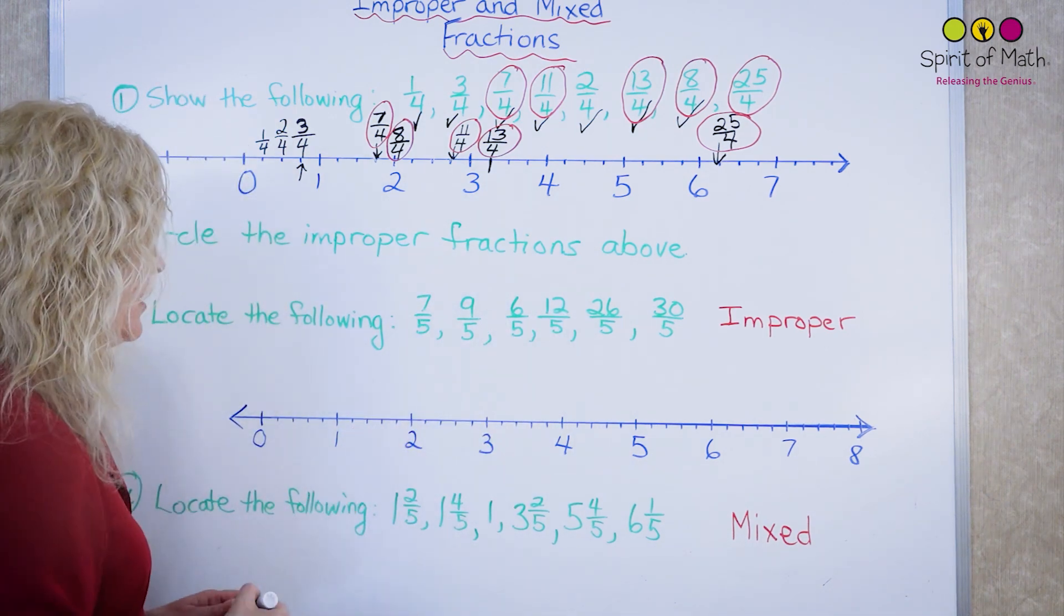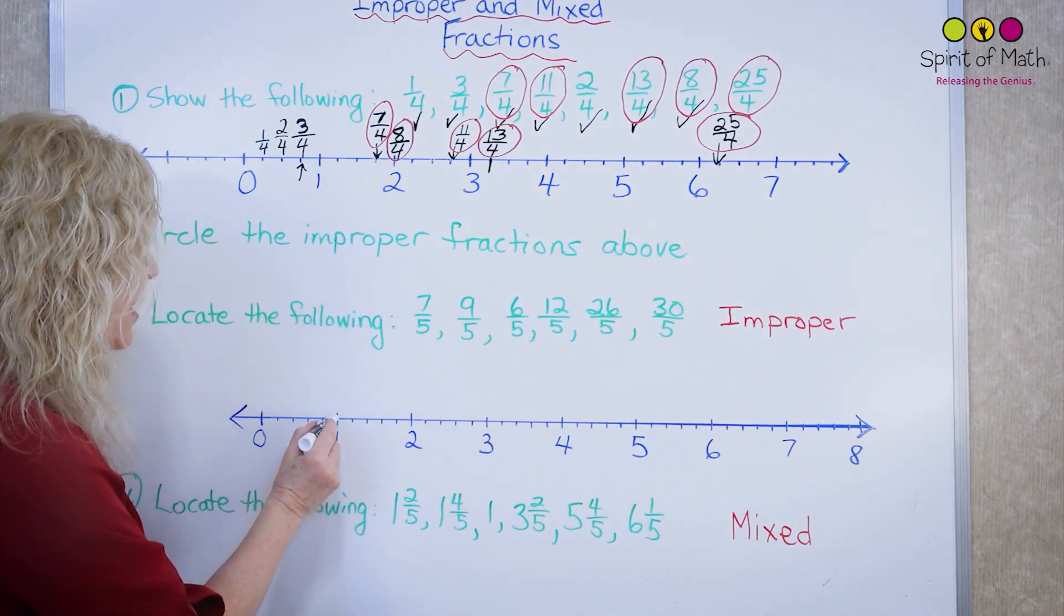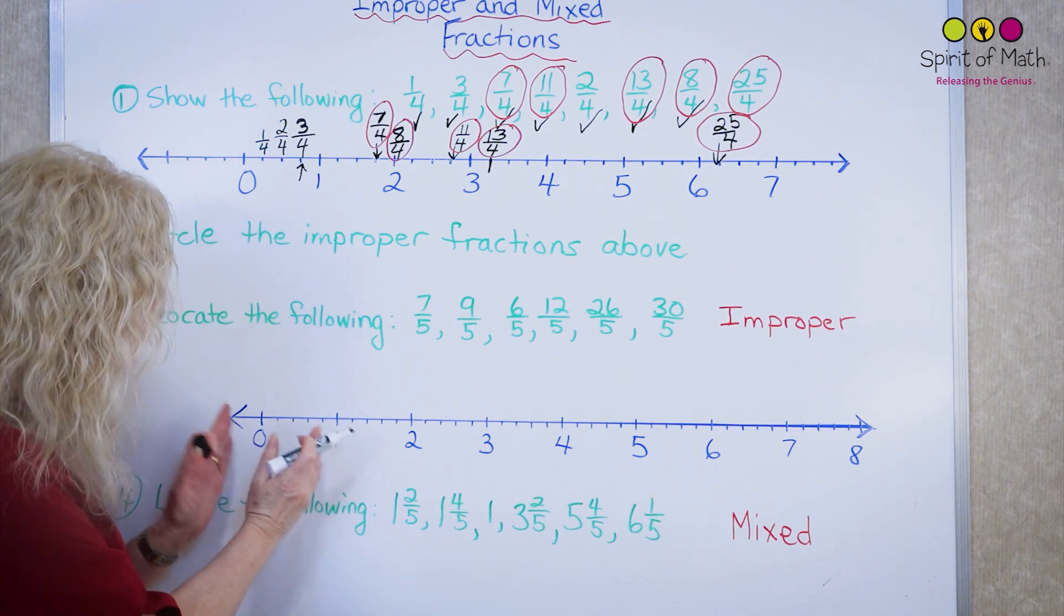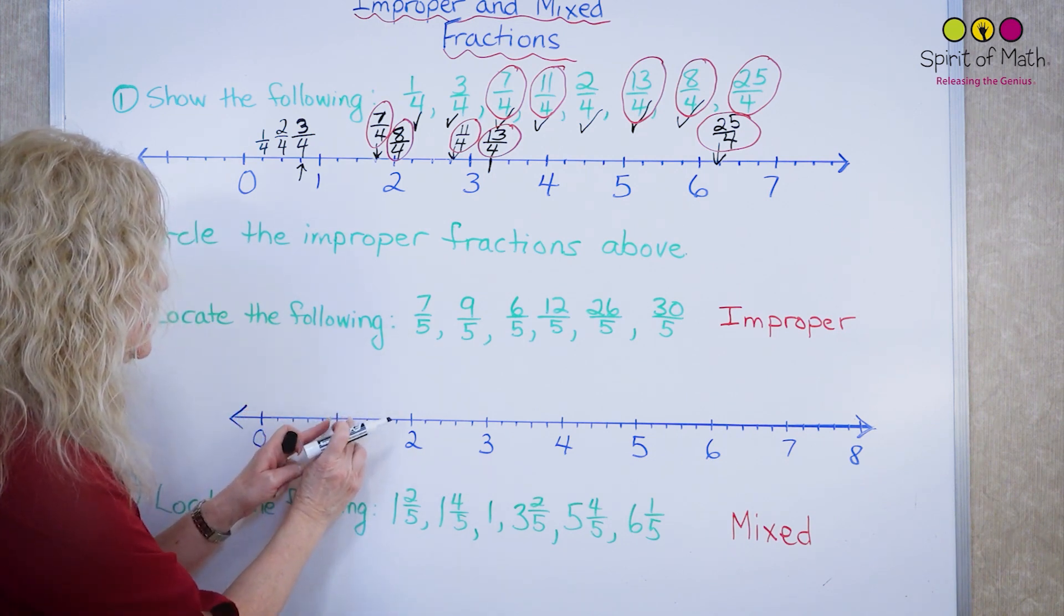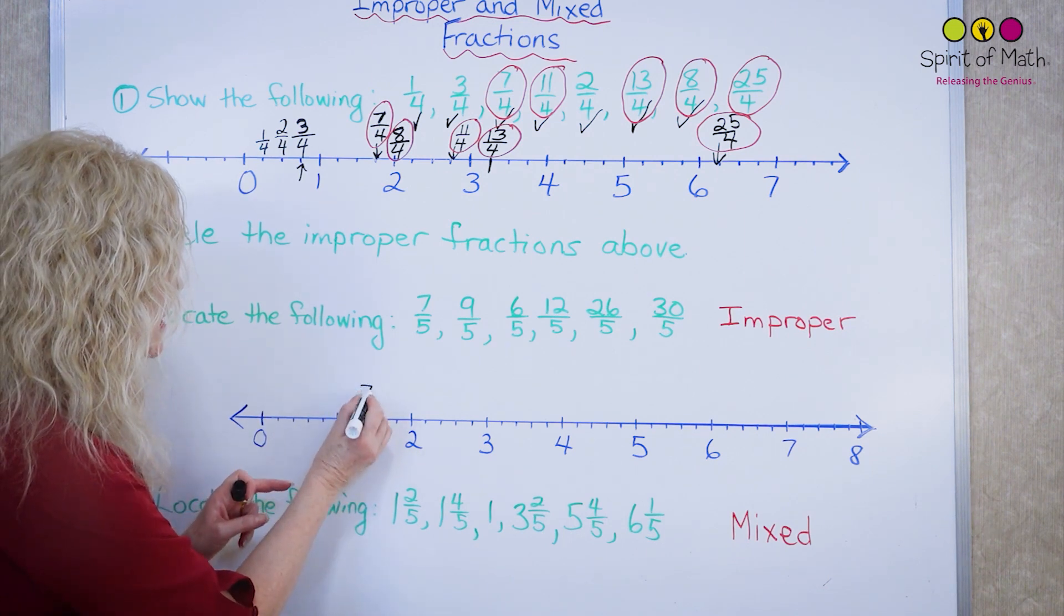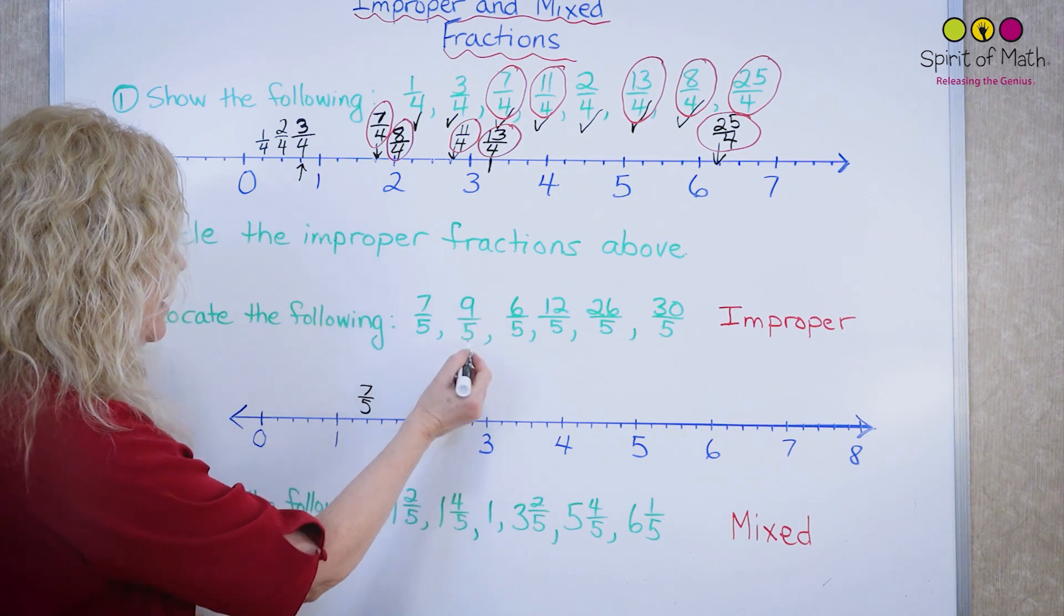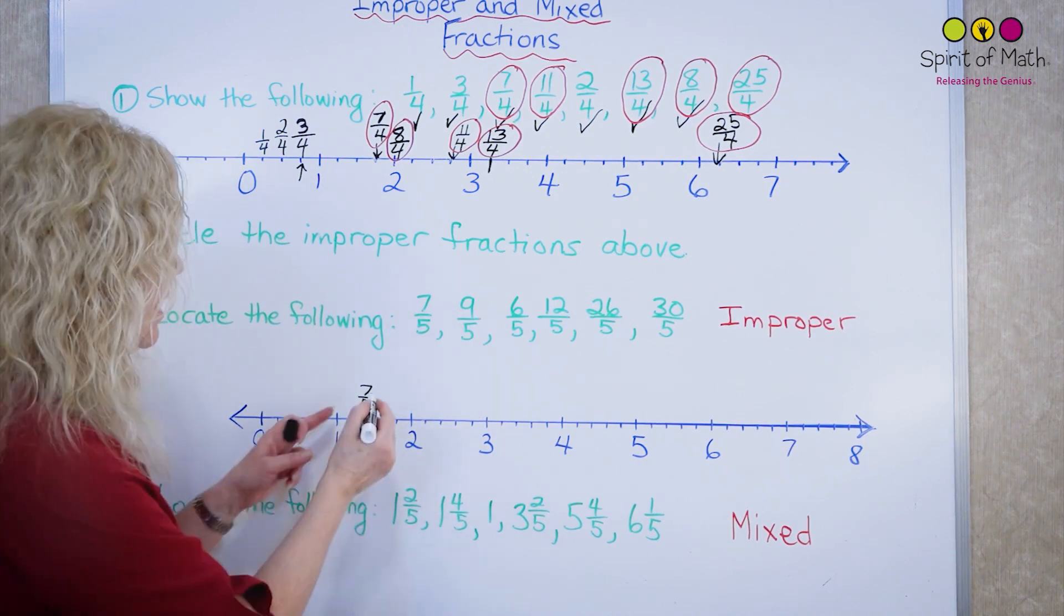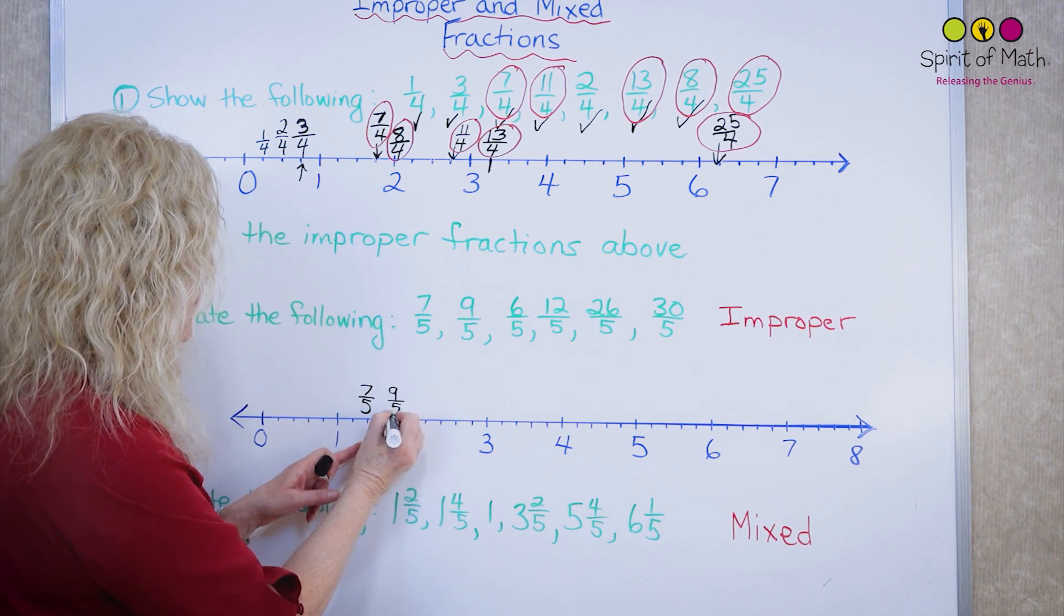So the seven fifths, that would be one, two, three, four, five. Remember, it's five up to one. So if you know that, I can do five right away. And then I can do six, seven. Seven fifths is right here. The next one, nine fifths. I'm at the seven, eight, nine. So I can do that one quickly, nine fifths.